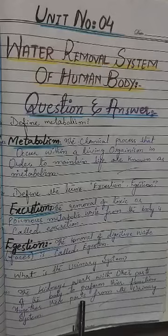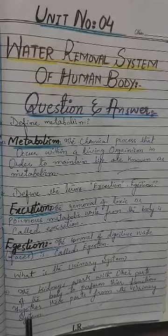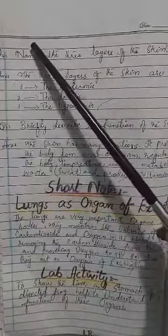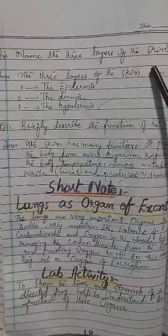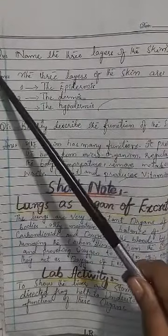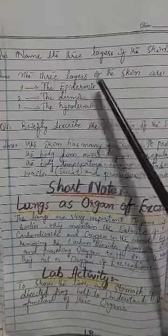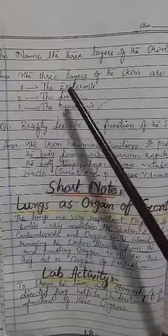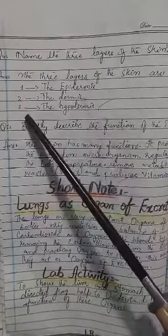Question number four: Name the three layers of the skin. The three layers of the skin are: number one, the epidermis; number two, the dermis; number three, the hypodermis.